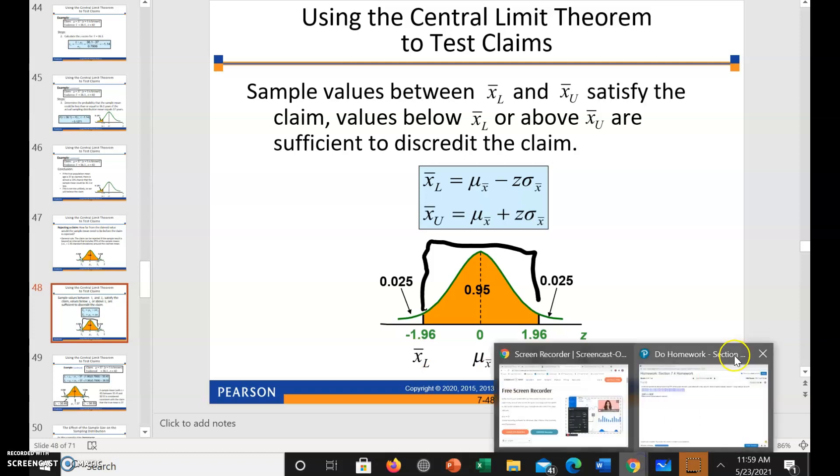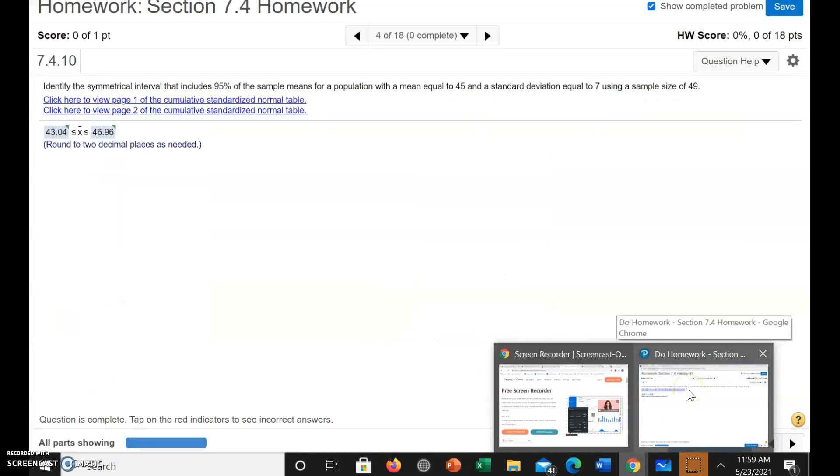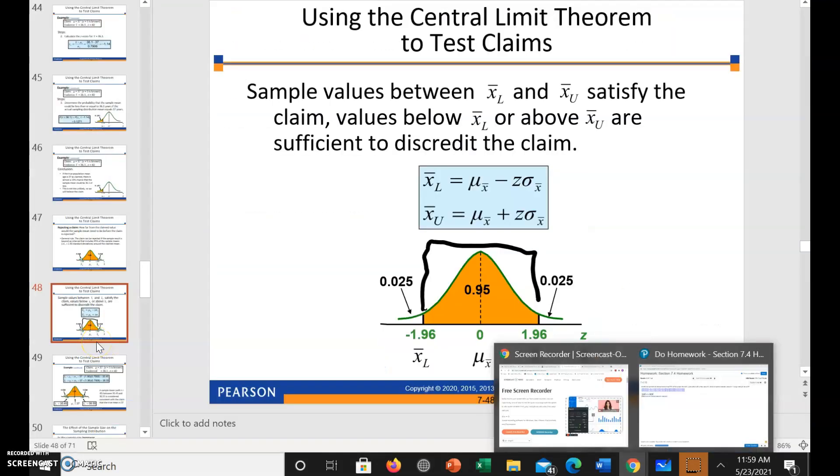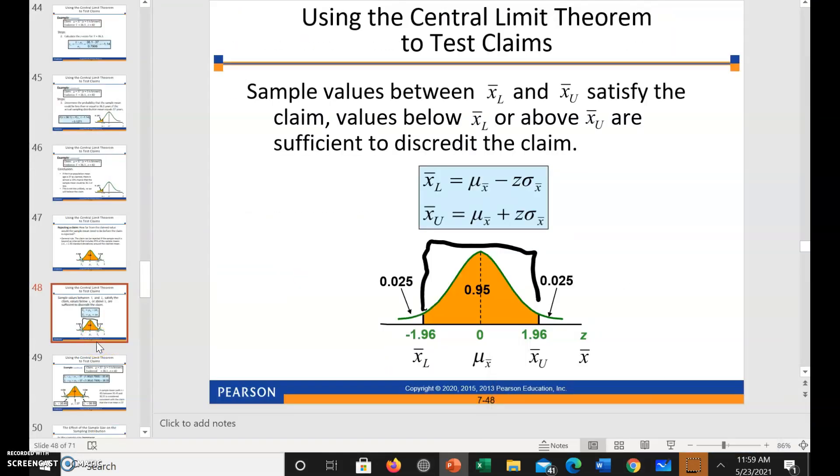Now the mean for our sample, or for our population, is 45. So here is 45. So we want to know what upper value of x and what lower value of x is associated with that.